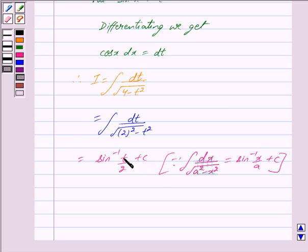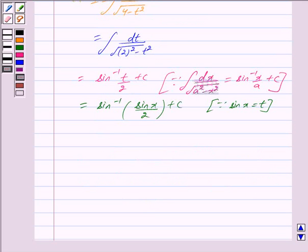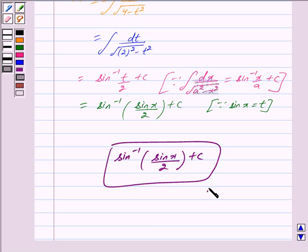Now we have put sin x is equal to t. So we have this is equal to sin inverse sin x by 2 plus c since sin x is equal to t. So we get our answer as sin inverse sin x upon 2 plus c. So this is the answer of the question. Hope you have understood the solution.